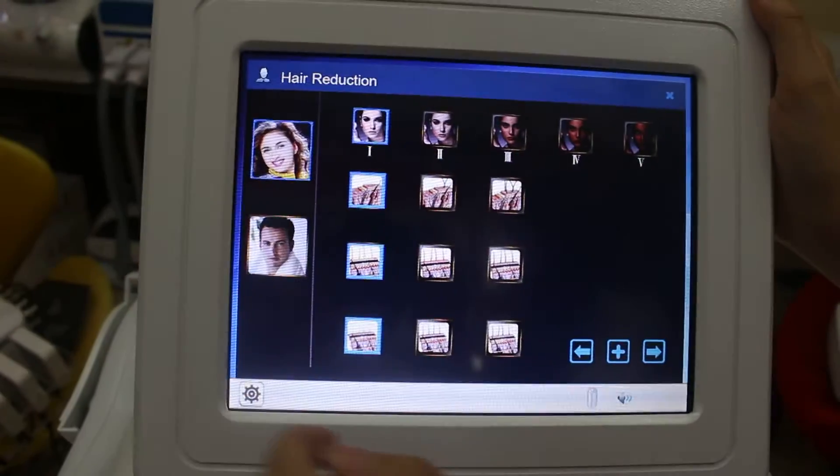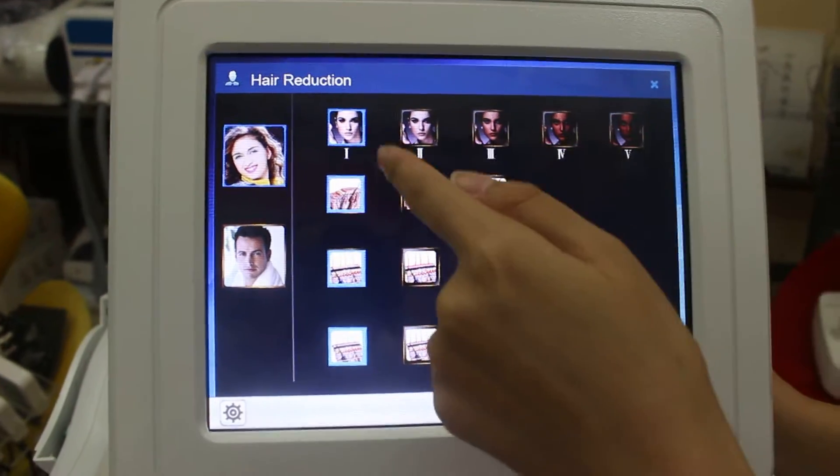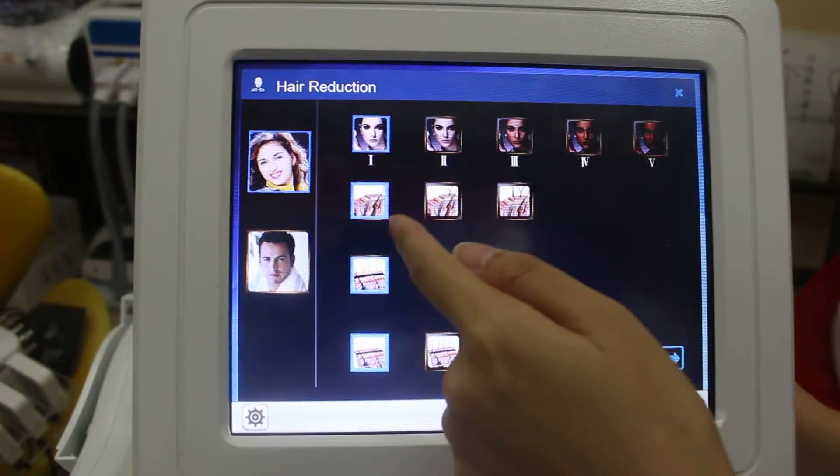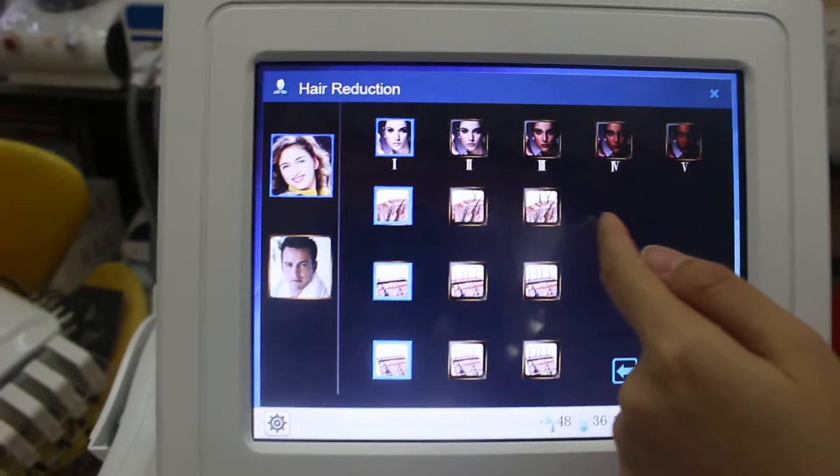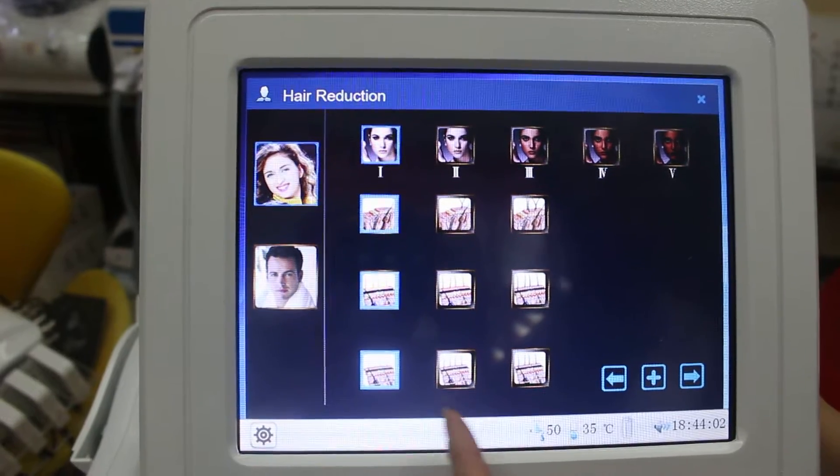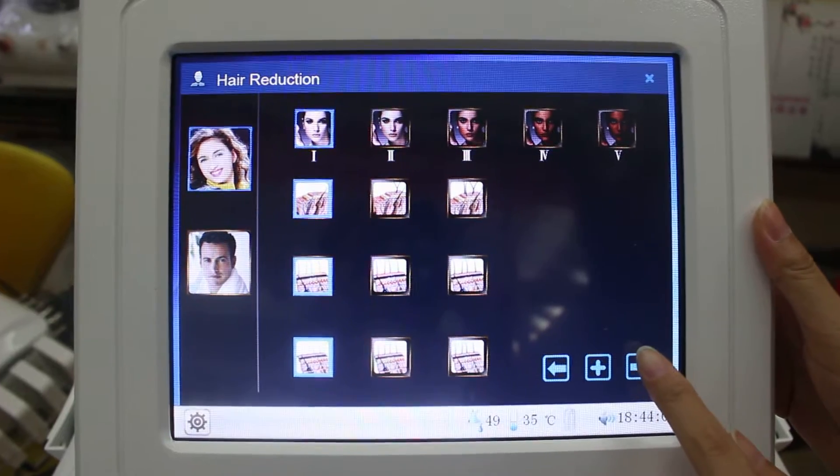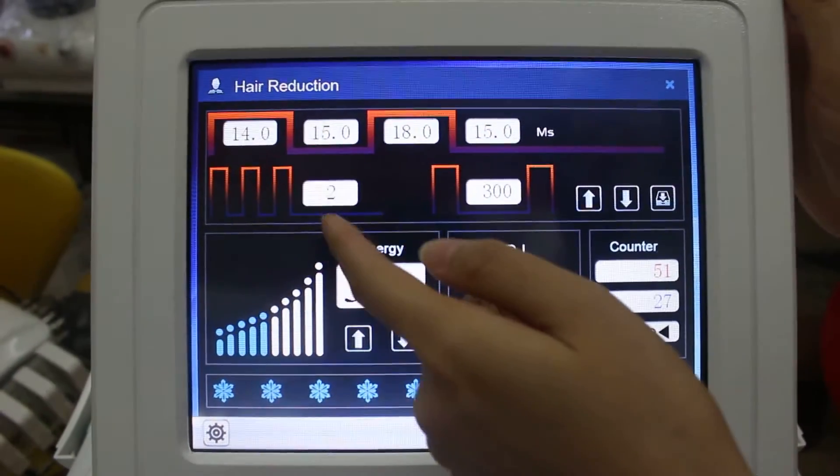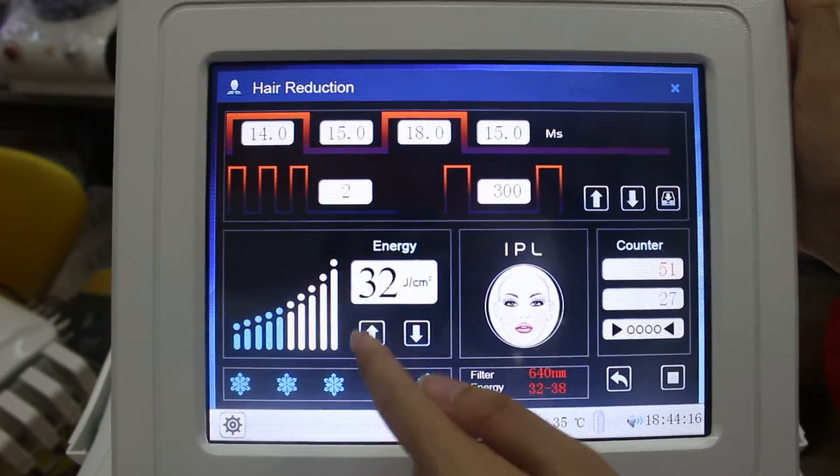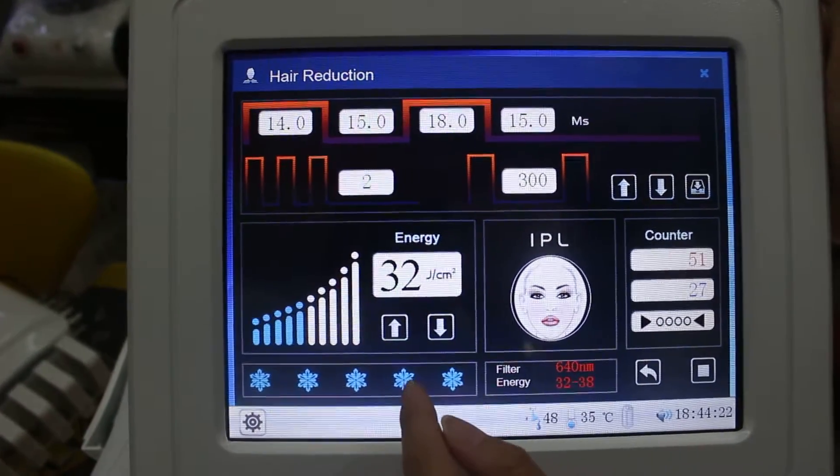Let's begin with hair removal. You can choose female or male. This is for the color of your skin. This is for the quantity of your hair. This is for the color of your hair. This is for the size of your hair. If you enter this mode, you cannot adjust these parameters. You can only adjust energy and cooling system.